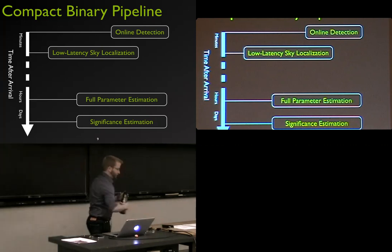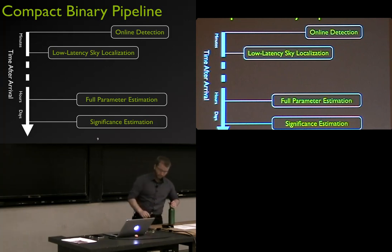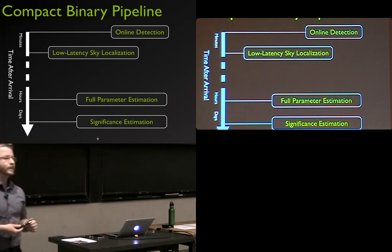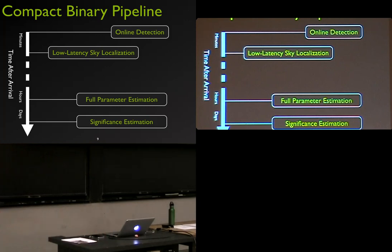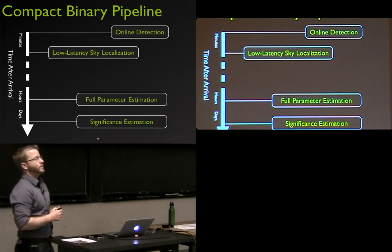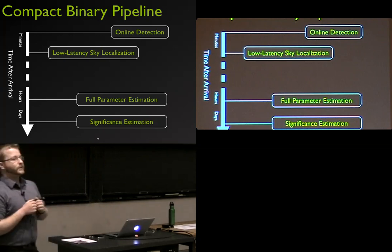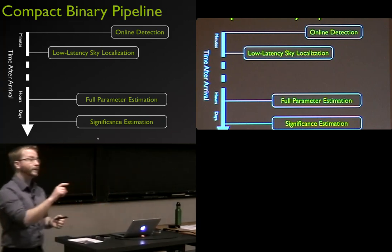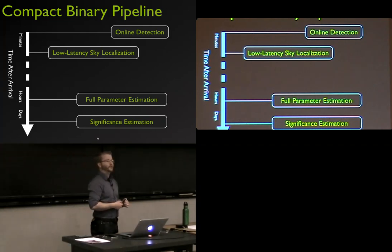On the high-frequency noise: the instrument measures strain by counting photons, which is a probabilistic game. There's uncertainty in how we count those photons, and that uncertainty goes up as we get to higher and higher frequencies. That's called shot noise. If you're interested in learning more, just Google 'shot noise.'